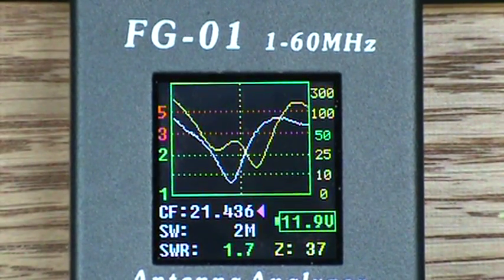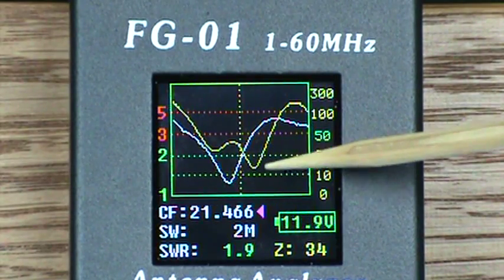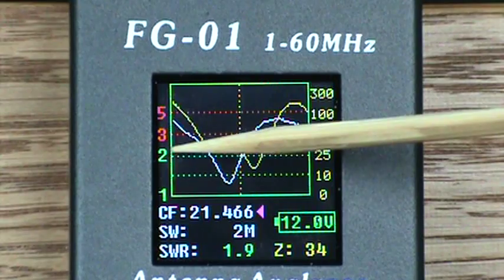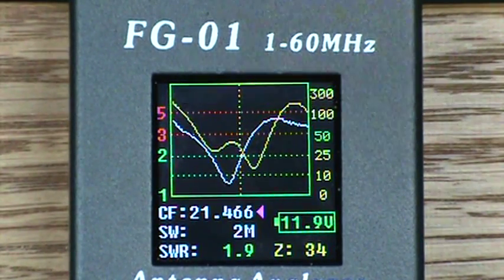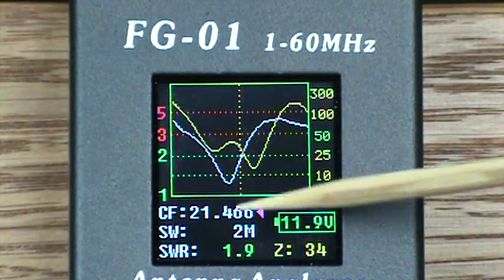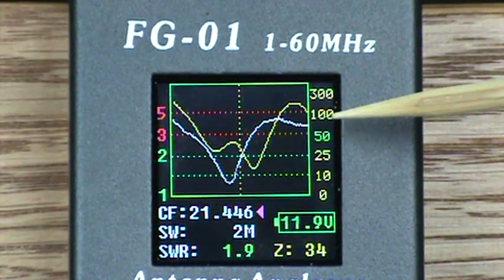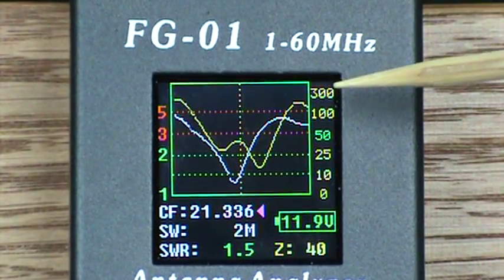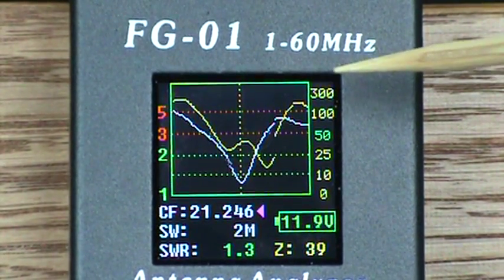Now I'm going to go up in frequency and here is the green line which represents a 1, 2, 3 and 5 to 1 SWR point. Here we are at 21.466.